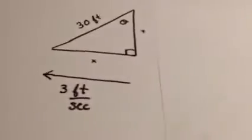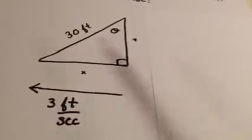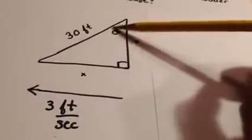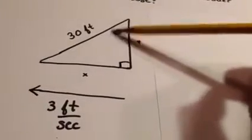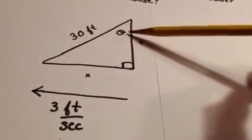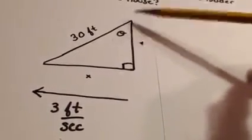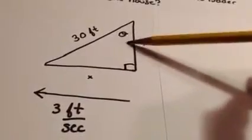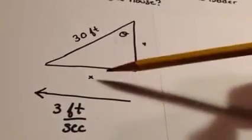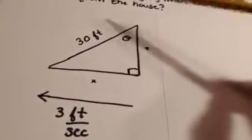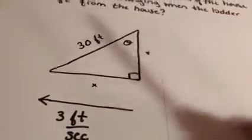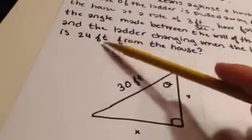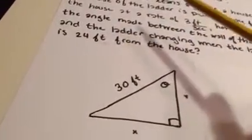So what we're going to do to start is draw a picture. Here we've got the 30-foot ladder leaning against the house, the angle between the ladder and the wall, the ground, and the rate that the ladder is being pulled away — 3 feet per second. We're looking for the rate of change of the angle at a particular snapshot value, and that snapshot is going to be at 24 feet.